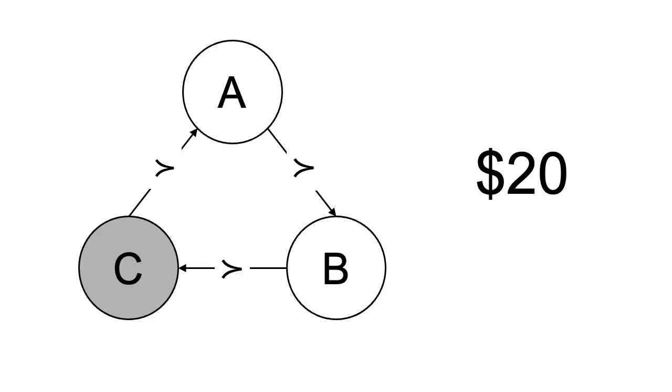One classic argument for transitivity is the concept of a money pump from Davidson et al., 1955. Suppose you have a person who prefers A to B, B to C and C to A. That is, they have intransitive preferences.